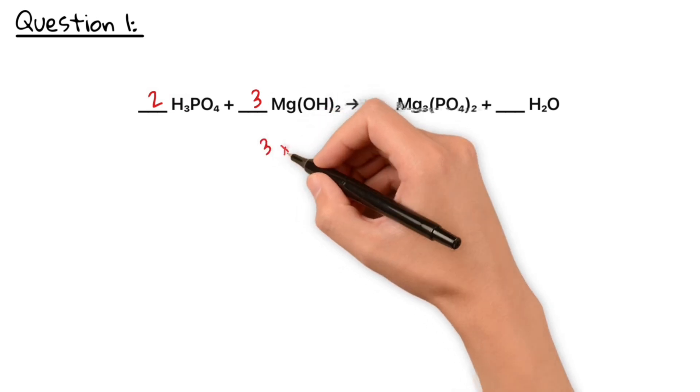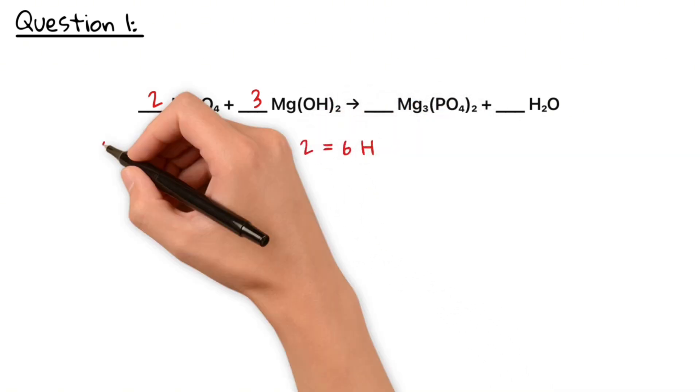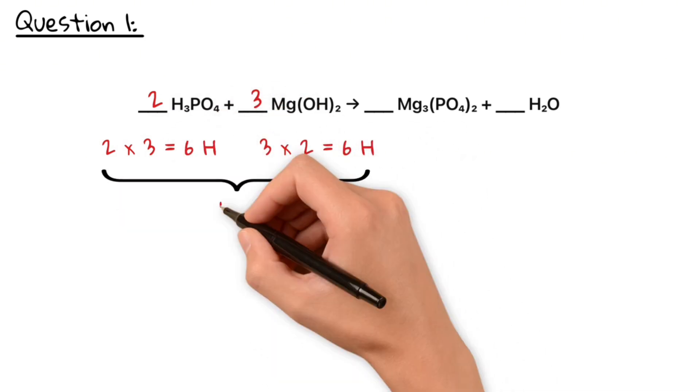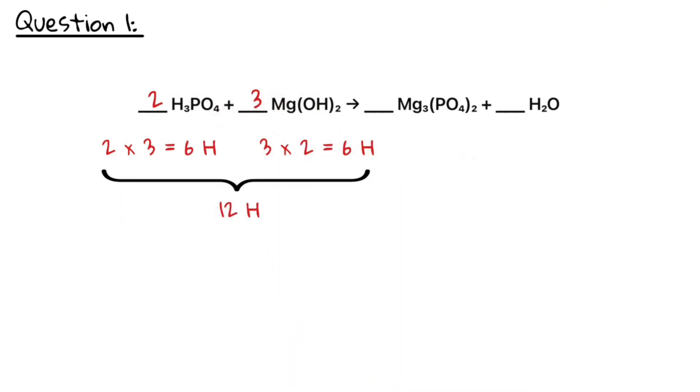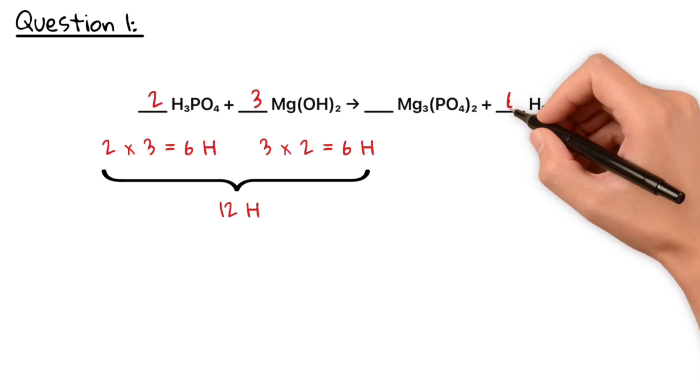On the left-hand side, we have six hydrogen from the acid and six hydrogen from the base, so a total of 12 hydrogens. To balance this, we need six H2O.